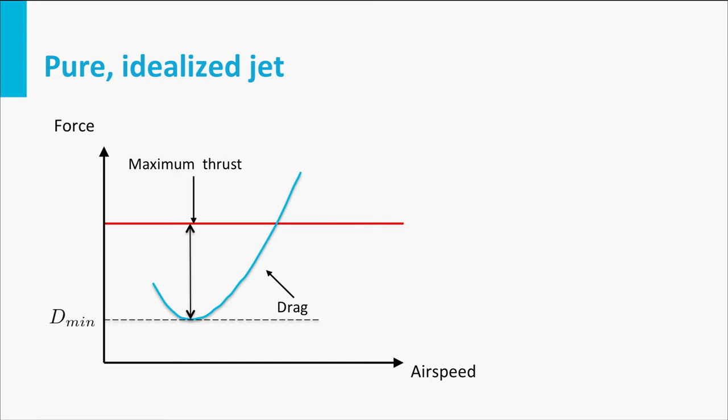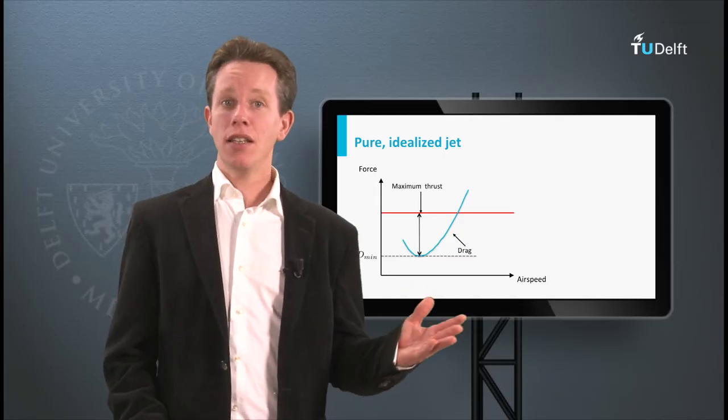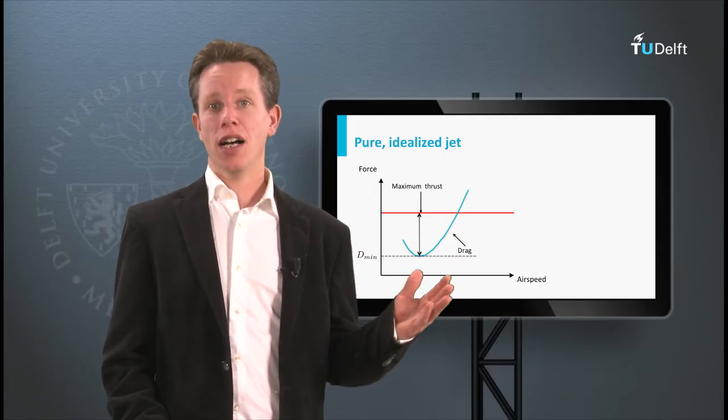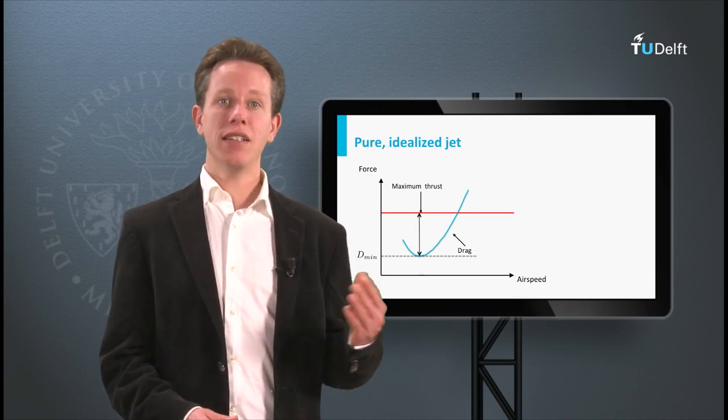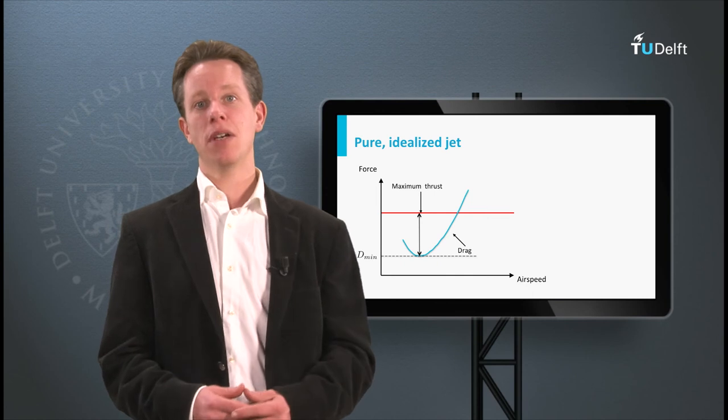you can see that the difference is maximum at the airspeed for minimum drag. The minimum drag condition is one we already encountered when evaluating horizontal flight performance. In this minimum drag condition, the ideal propeller aircraft can achieve maximum range and the idealized jet aircraft can achieve maximum endurance.